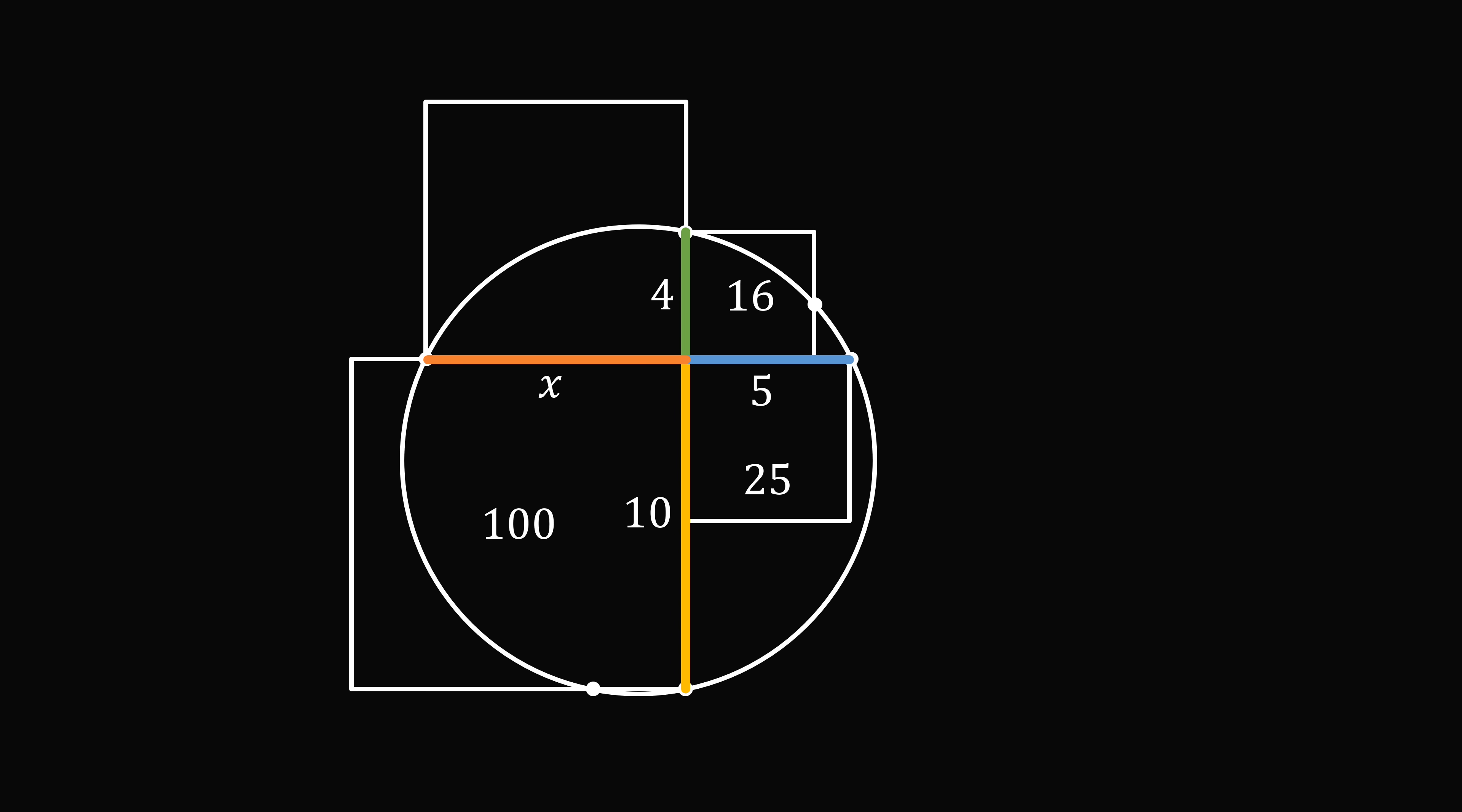Let's focus just on these two chords of the circle. By the Chord Chord Power Theorem, we have 5 multiplied by x is equal to 4 multiplied by 10. So, 5x is equal to 40, and x is equal to 8.